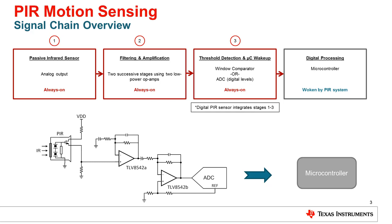We'll focus on the first three blocks in this video, which are all labeled as always-on. As PIR systems continue to grow in size by adding more wireless nodes to their network, power consumption becomes a critical design factor, especially for battery-powered applications. That's why it's important to choose low-powered devices for the signal chain, which allows you to save power at each step.